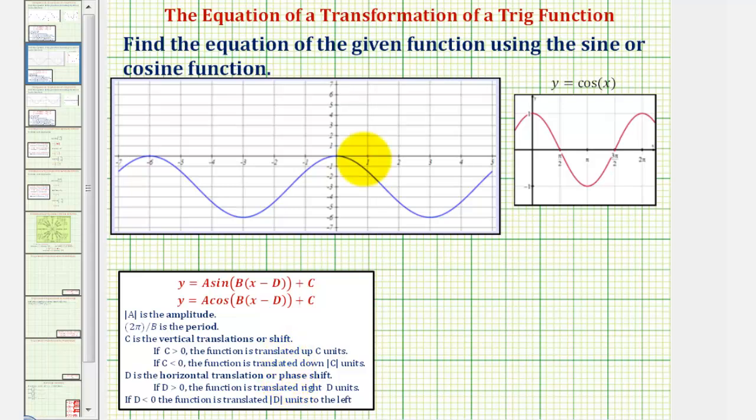So we'll begin by focusing on one piece of our function, which will resemble either the cosine or sine function. If we start at x equals zero, notice how this piece of the function resembles the basic cosine function graphed here in red. So we'll build our function using the basic cosine function as reference.